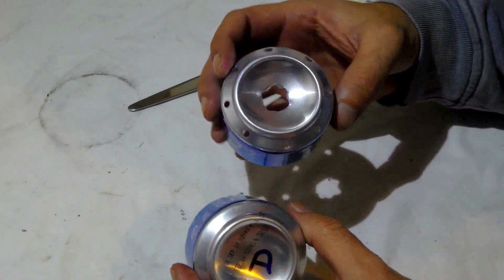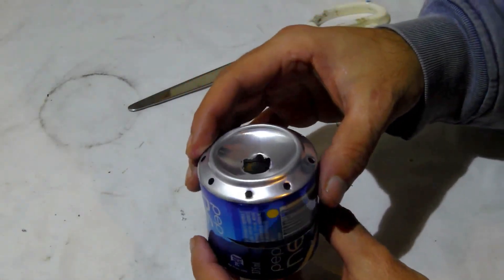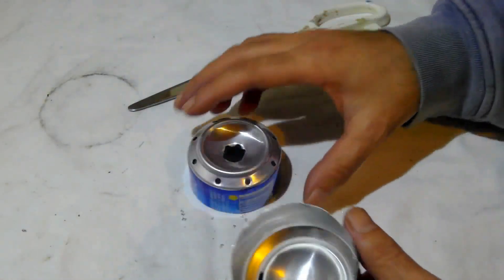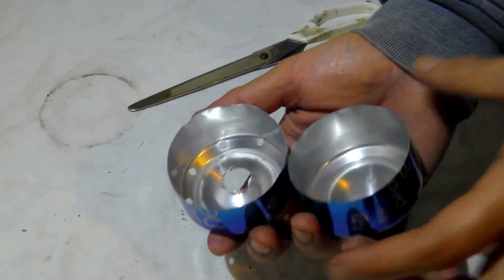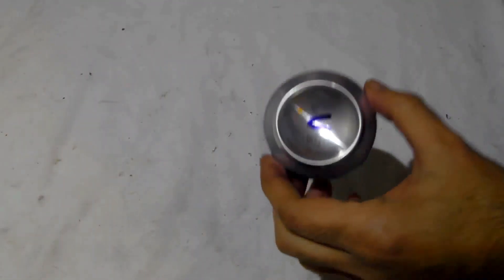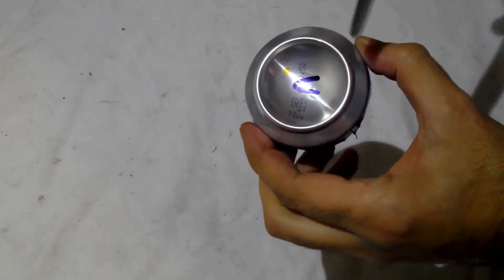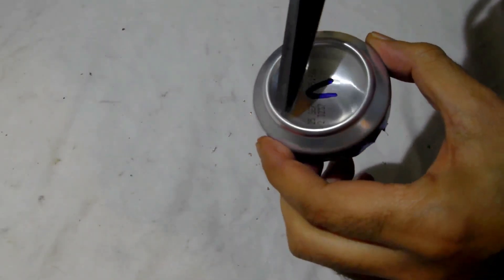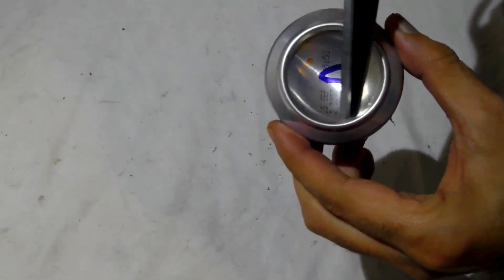There you have it, two halves that will then fit together and away we go. Just give these a quick wash out and we're ready. Now we cut down to the inside of that rim there.